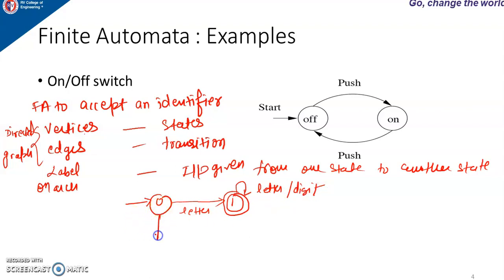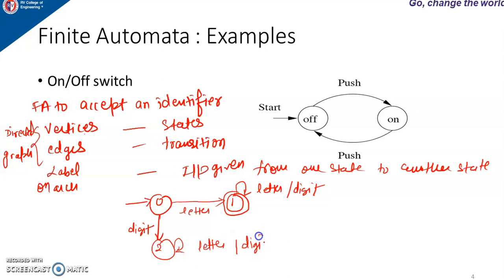If we start with a digit — if the first symbol is only a digit — the machine has to go to a dead state. If at this point you are not understanding, don't worry. Later on I will be explaining in detail how to design a finite automata, and that time you will understand in a better way.